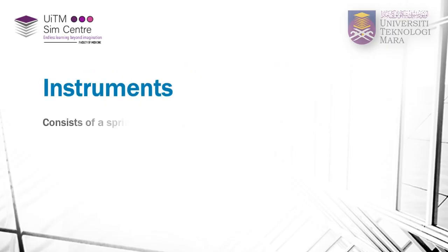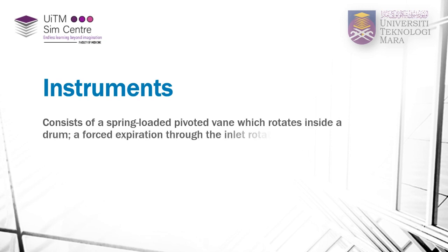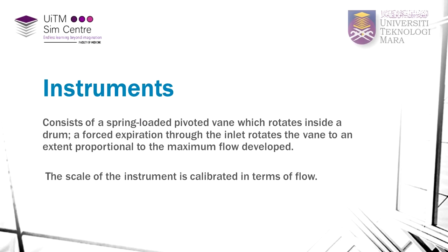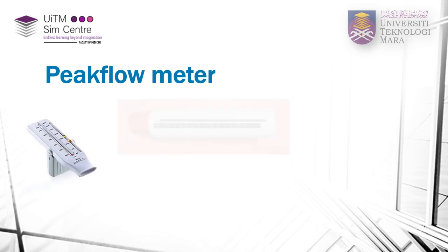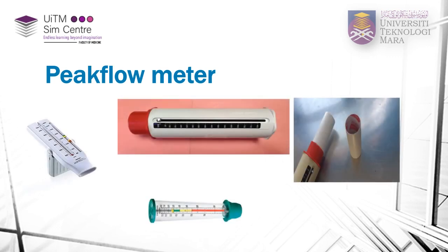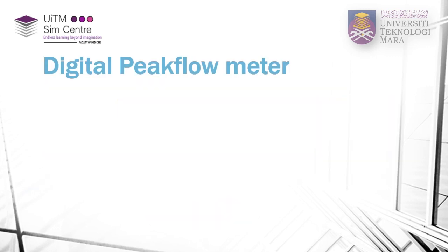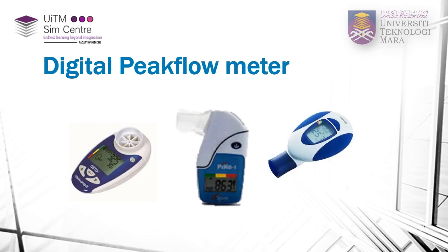What is a peak flow meter? A peak flow meter consists of a spring-loaded, pivoted vane which rotates inside a drum. A forced expiration through the inlet rotates the vane to an extent proportional to the maximal flow developed. The scale of the instrument is calibrated in terms of flow. These are the peak flow meters that are commonly used, and these are the digital peak flow meters.